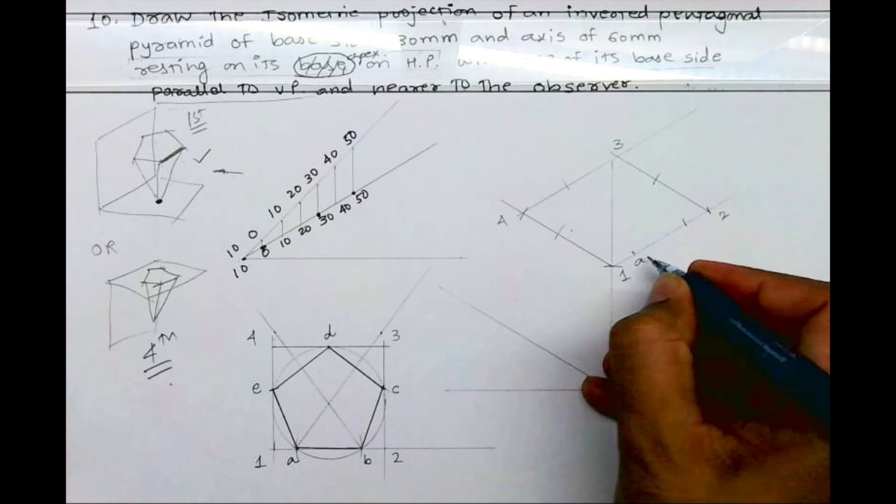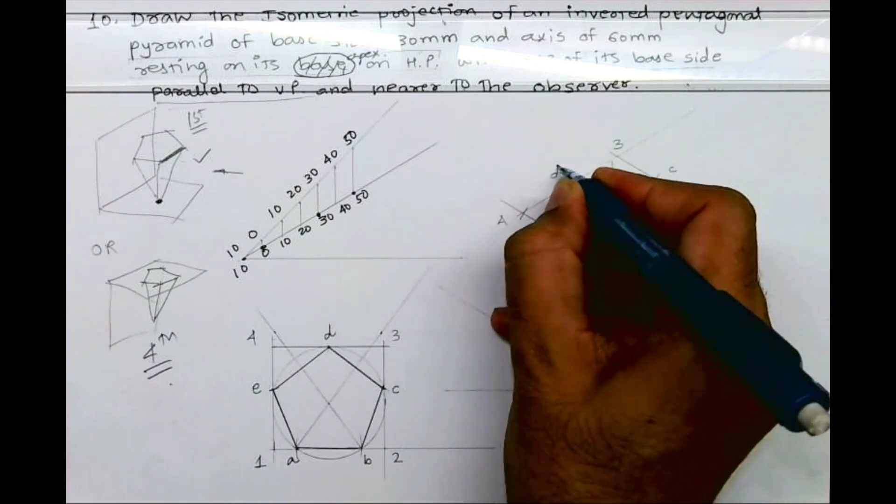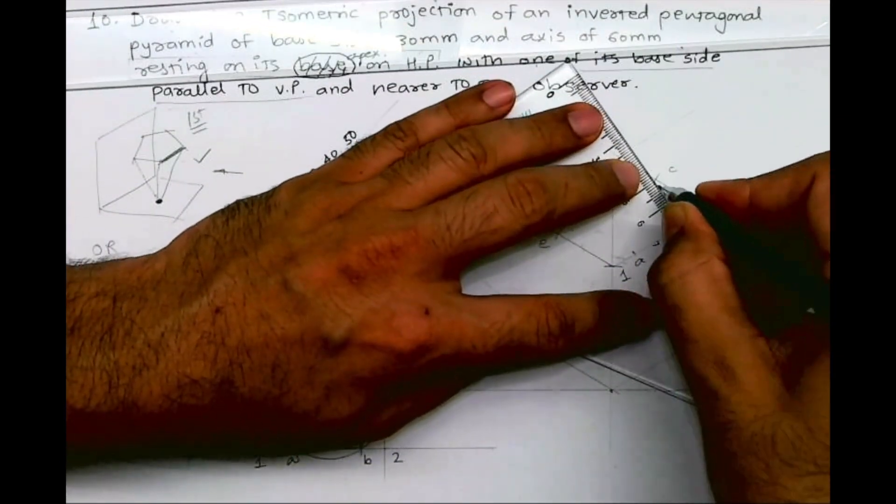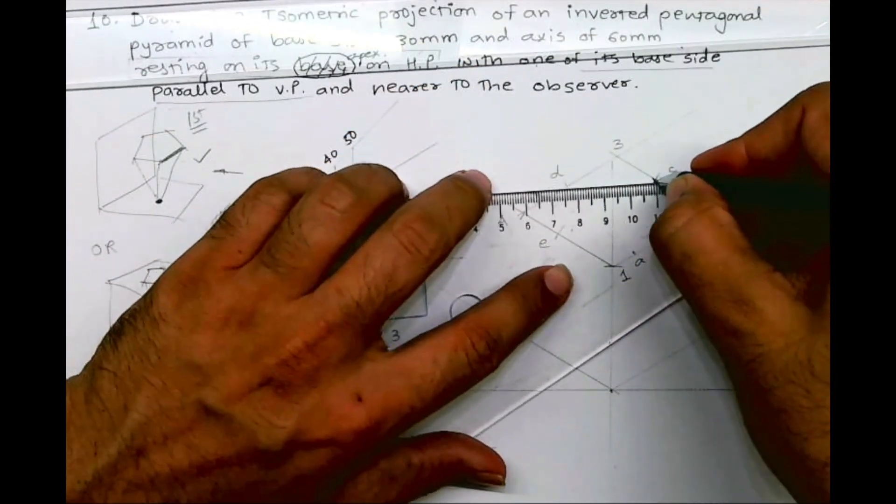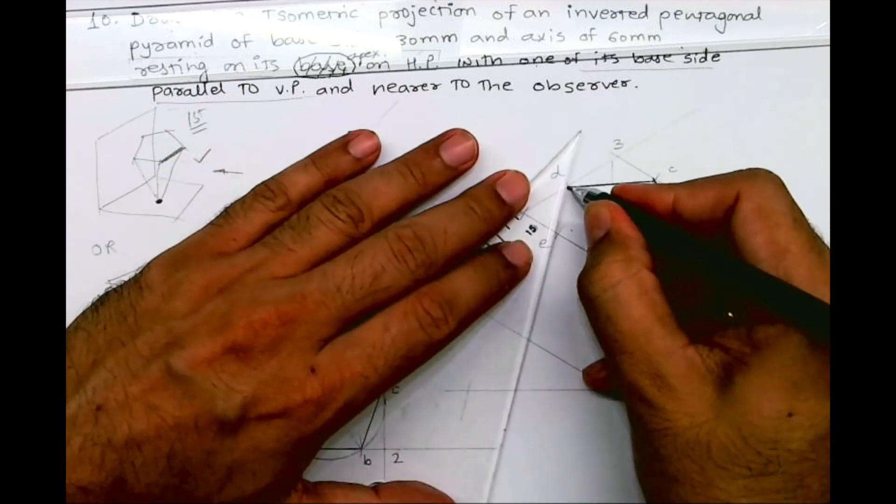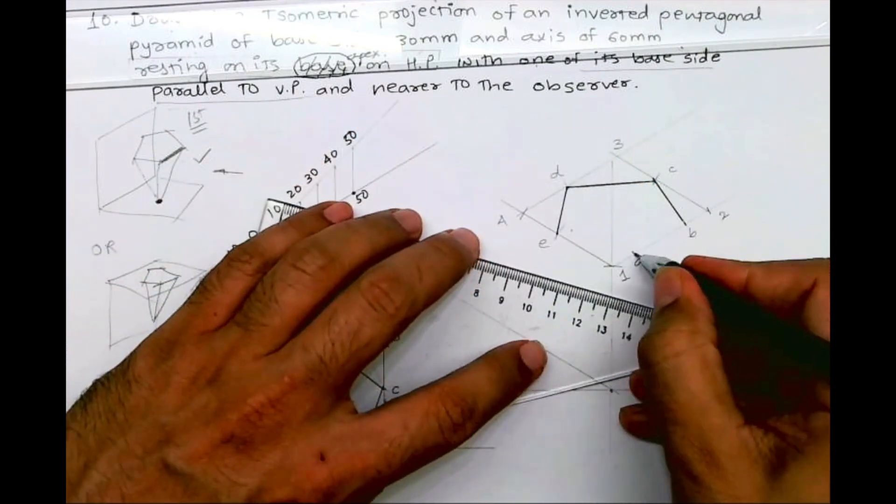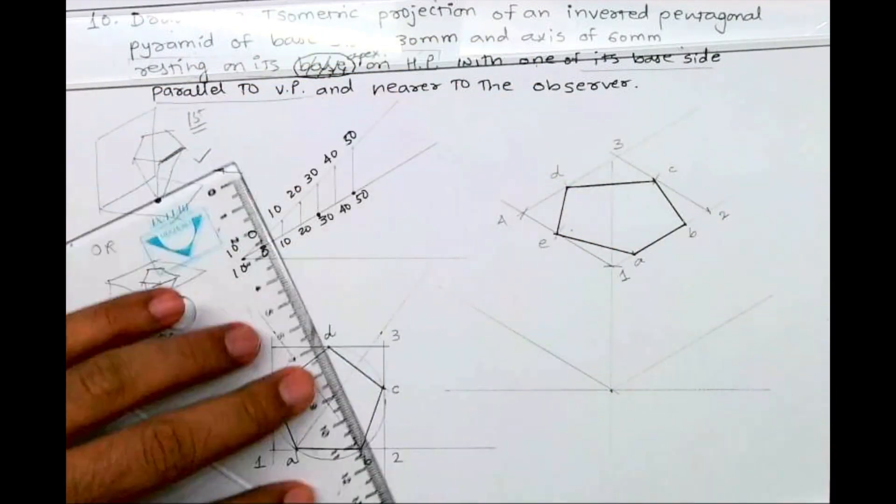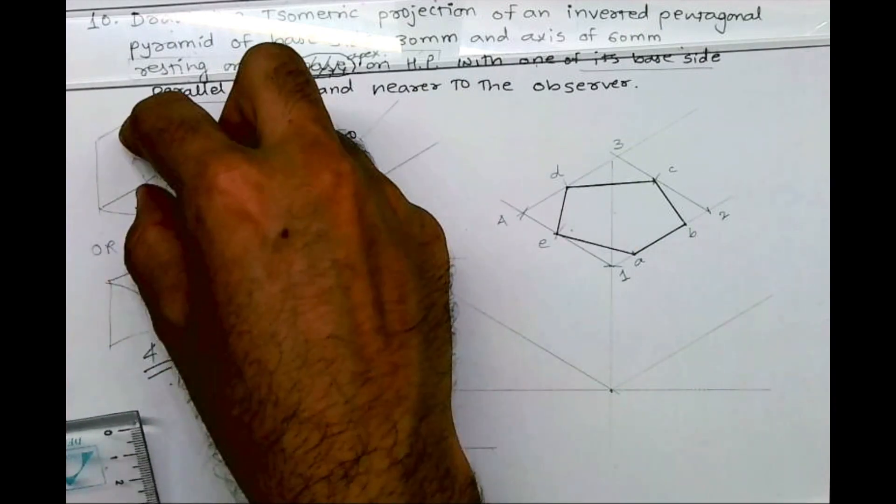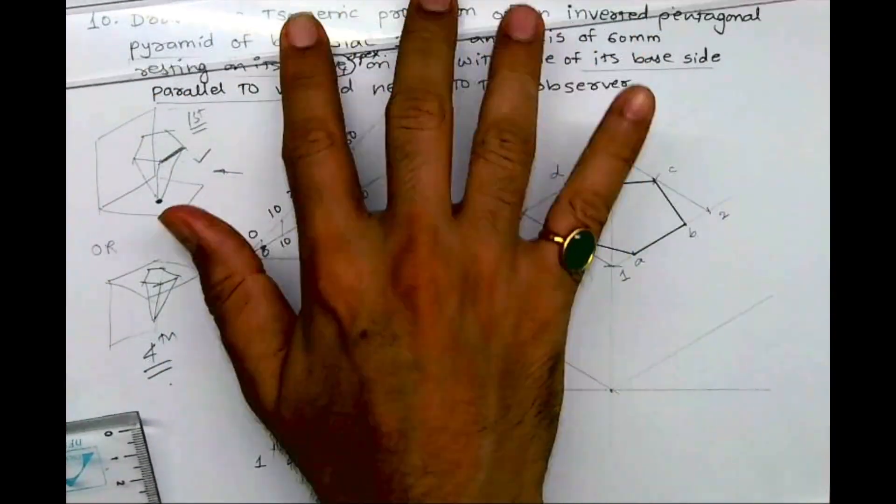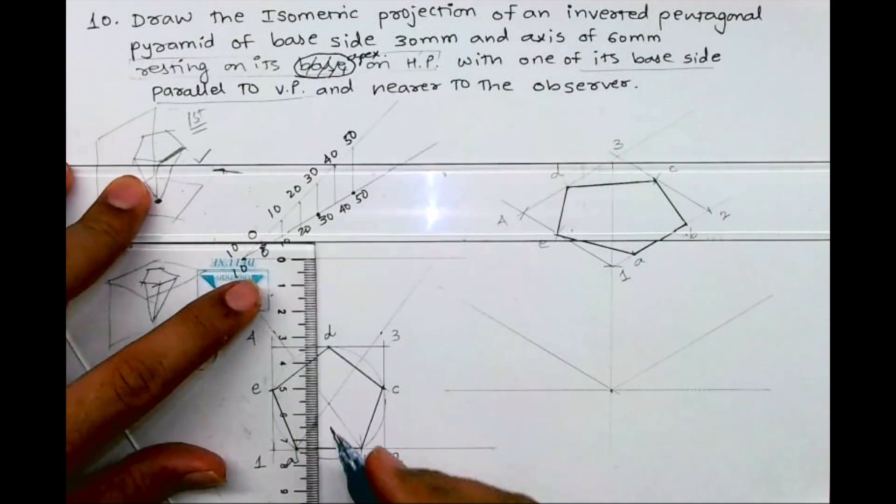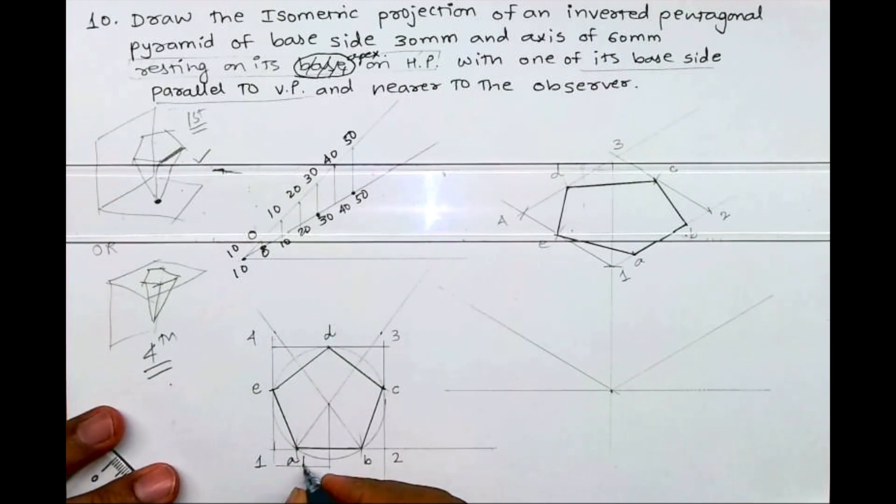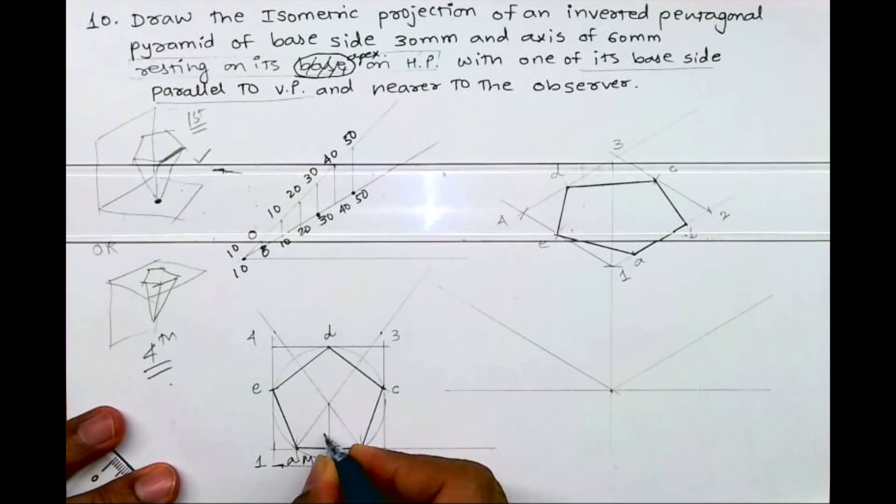So we got pentagon. Now what we need to do, we need to join A, B, C, D, E, so we'll get the pentagon. Now we need to find the center point. Axis height is 60. So we'll first find out M and N, we'll find out point O, and from point O will go down by 60.